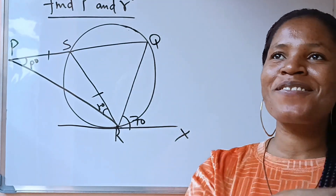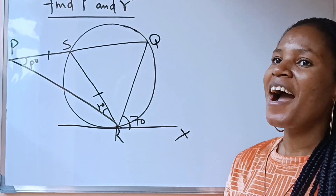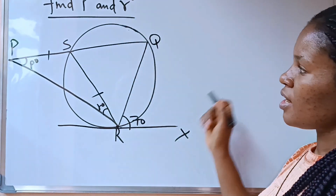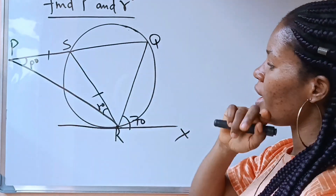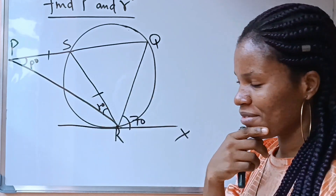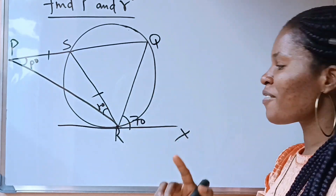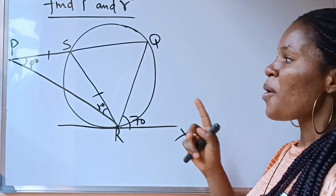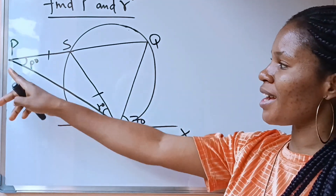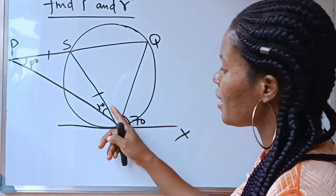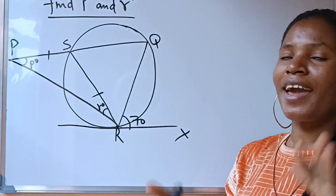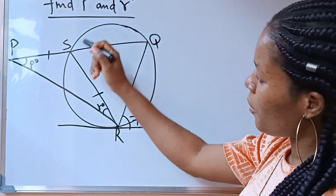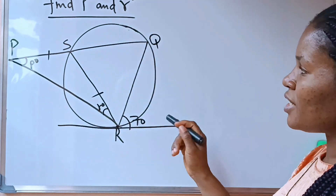Hi everybody, welcome to my channel. In today's problem, we have to find the value of p and the value of r, and we are given only 70 degrees. That means we need to apply some theorems to get the values of p and r. This question is from the topic of tangents of a circle under circle theorem.